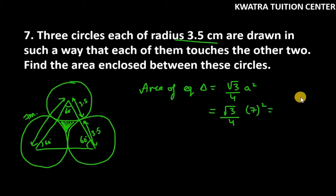You will get 7² as 49, and 49√3, where √3 value is 1.71. When you solve the whole term, you will get 21.2176 cm². The area of the equilateral triangle equals this.